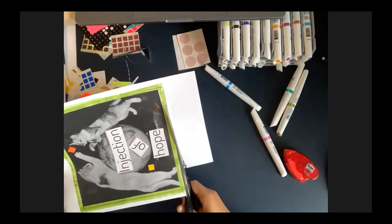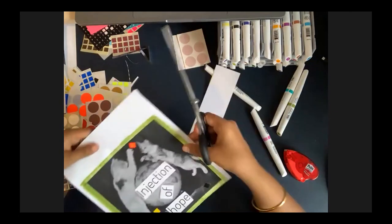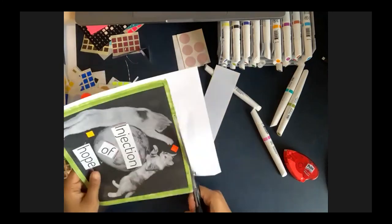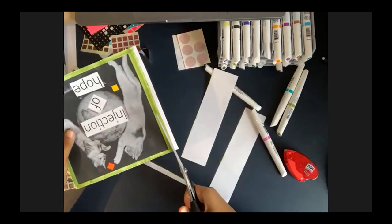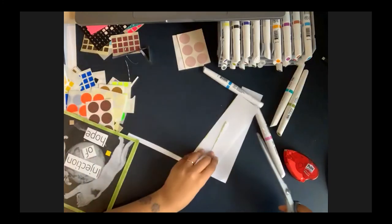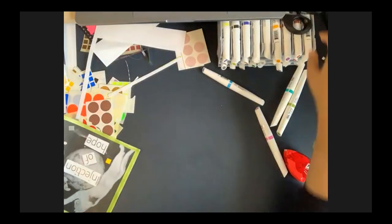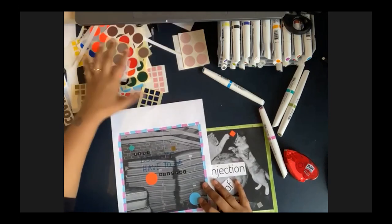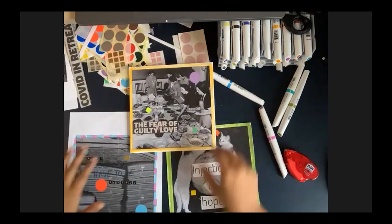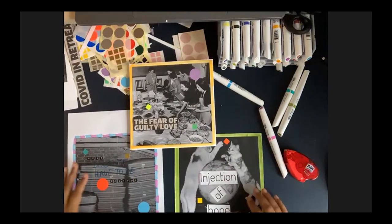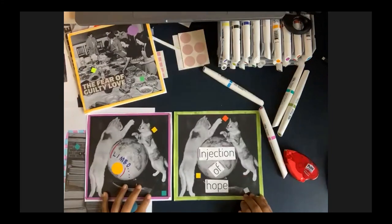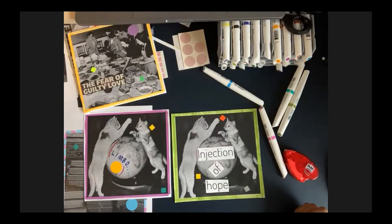More people joining from Dubai, East London, Camberwell, Ladywell — amazing. I'm pleased you've all managed to join and I hope you've enjoyed the workshop. I'm going to have a look at what I've done today. We have 'the injection of hope,' 'rest doesn't have to be restful,' and 'the fear of guilty love' as a set. The meanings are so different — they really change depending on the image. I'm really interested to see what you've all done with your collages.